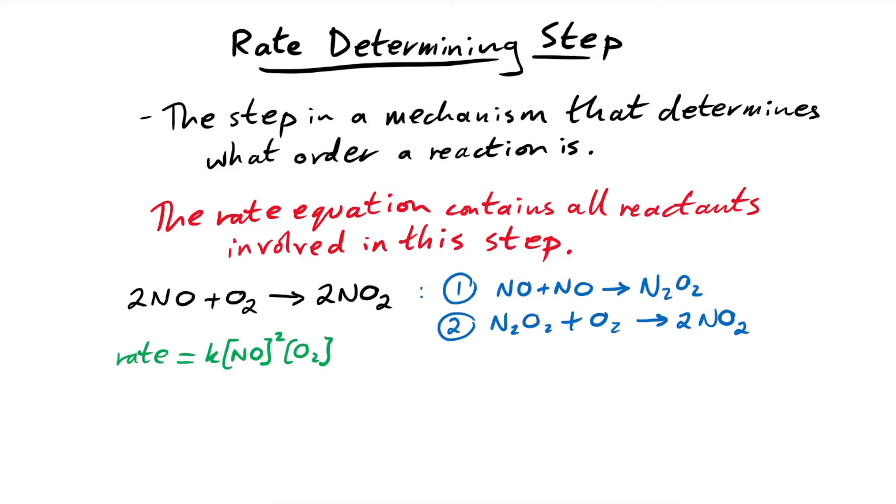Which of these steps is the rate determining step? Well, here's the rate equation for this reaction. Rate equals K times the concentration of NO squared times the concentration of O2. There's an invisible one there. So the reaction is second order with respect to NO, and first order with respect to O2. Which of these steps has the NO and the O2 in then? Well, it's not the first step, because it has NO plus NO, fine, but it doesn't have O2. So it can't be that one. Let's look at step two, N2O2. Well, that was made from the NO, so that does count, plus the O2. So yes, we have all of the reactants that are in the rate equation in this step. So that means step two is the rate determining step.